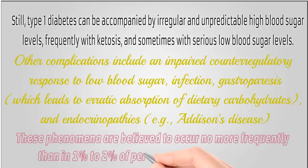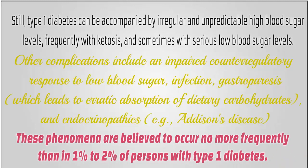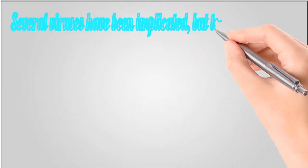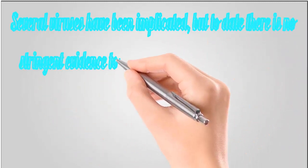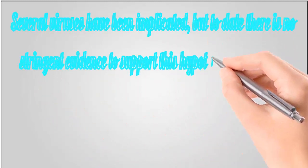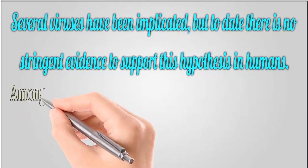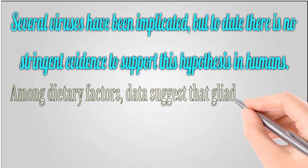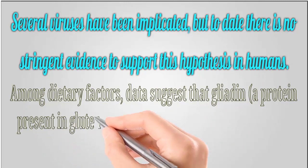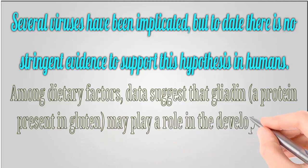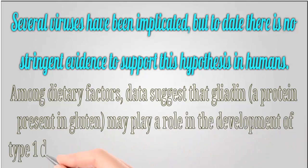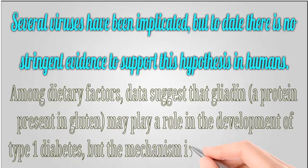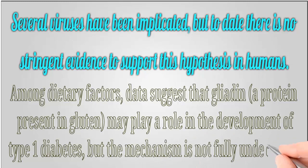Additional complications include endocrinopathies such as Addison's disease. These phenomena are believed to occur no more frequently than in 1% to 2% of persons with type 1 diabetes. Several viruses have been implicated, but to date there is no stringent evidence to support this hypothesis in humans. Among dietary factors, data suggest that gliadin, a protein present in gluten, may play a role in the development of type 1 diabetes, but the mechanism is not fully understood.